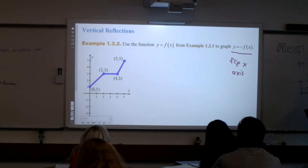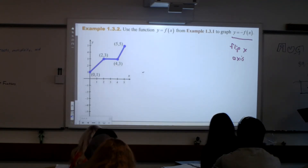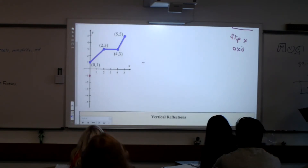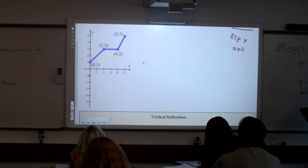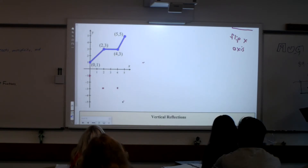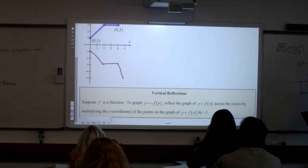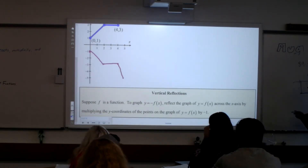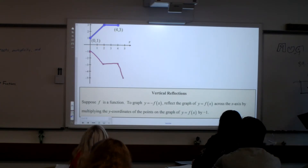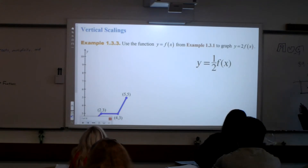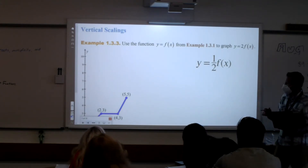So we're going to take these points, and the y value is going to be times negative. Instead of being at 1, we'll be at negative 1. At 2, 3, we're going to be at 2, negative 3. Same with 4, 3 — it'll be 4, negative 3. And instead of 5, 5, we'll be at 5, negative 5. So it should look like it just got flipped over the x-axis. So adding on the outside moves it up, subtracting on the outside moves it down, and times it by negative is going to flip over the x.